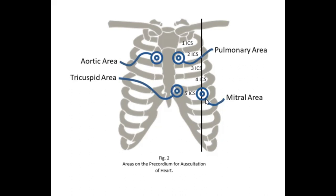The mitral valve is what we call the apex beat, because this is where the apex — the tip — of the heart is located. To find the apex beat, you come down your left clavicle to the fifth intercostal space, left of the mid-clavicular line. This is a very important auscultation point.